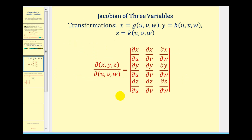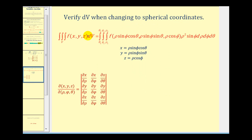The Jacobian is defined by the three by three determinant of these partial derivatives with respect to u, v, and w. In this video, we're going to verify that dV equals rho squared sine phi when converting from rectangular to spherical coordinates using triple integrals. Here are the three equations that relate rho, phi, and theta to x, y, and z. Let's set up this three by three determinant and verify that we get rho squared sine phi.